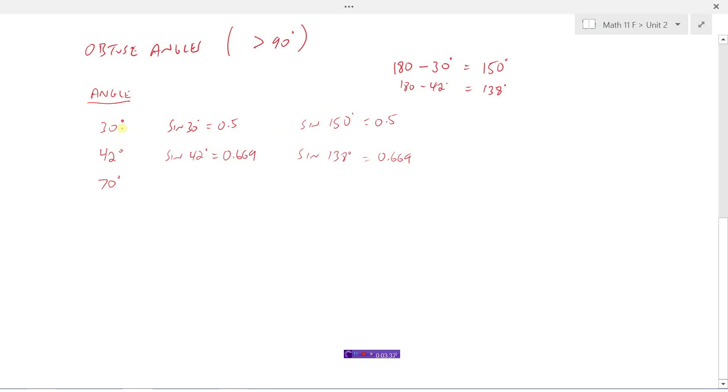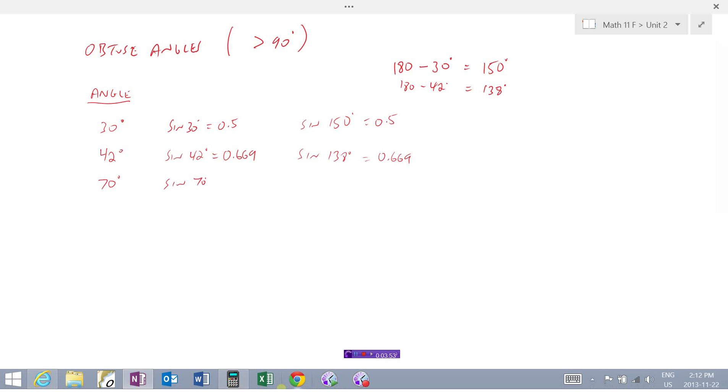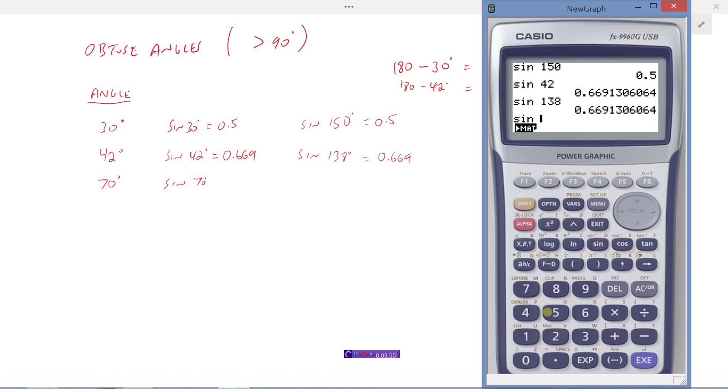It's looking like if you have an acute angle, that if you go 180 minus that acute angle to get the obtuse one, the obtuse angle is exactly the same as the acute angle. Let's just check this one, last one here, sine 70 degrees. Sine of 70 is 0.94.